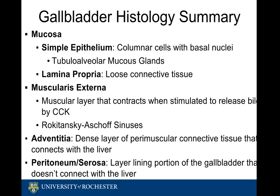Overall, important aspects of gallbladder histology to remember are: firstly, the innermost mucosal layer is made up of the simple epithelium and the lamina propria. The simple epithelium consists of columnar cells with basal nuclei, and tubuloalveolar mucous glands can be found in this layer within the neck of the gallbladder. The lamina propria is a loose connective tissue layer that connects to the muscularis propria, a muscular layer that contracts when stimulated by hormone CCK. Rokitansky-Aschoff sinuses can be found within the muscularis propria, especially in cases of chronic inflammation. Lastly, the final layer includes the dense adventitia where the gallbladder connects with the liver, and the serosa that surrounds the rest of the gallbladder as it rests in the abdominal cavity.